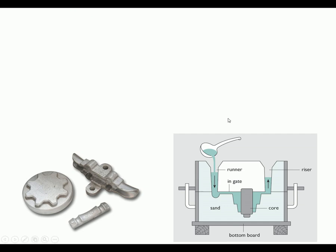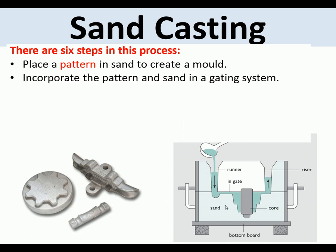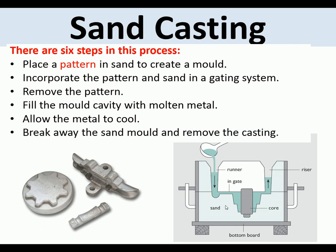We can see here aluminium being poured in, and a mold with a core used for a hollow casting. The steps are: place a pattern in the sand to create a mold; incorporate the pattern in the sand with a gating system to let the air out and the metal in; remove the pattern; fill the mold cavity with molten metal; allow the metal to cool; then break the sand away and remove the casting.